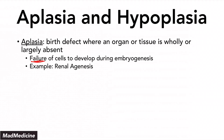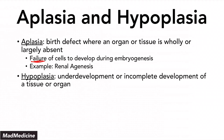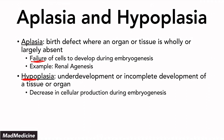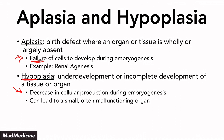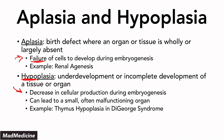Hypoplasia is the underdevelopment or incomplete development of an organ or tissue. In hypoplasia, the tissue did not develop completely — hence the prefix 'hypo.' This happens because of a decrease in cellular production during embryogenesis. This is different from aplasia: in aplasia you have a complete failure of cells to develop, whereas in hypoplasia the cells do develop, but they're just not completely developed. This often causes patients to have an underdeveloped, small, and often malfunctioning organ. A classic example is thymus hypoplasia in DiGeorge syndrome.